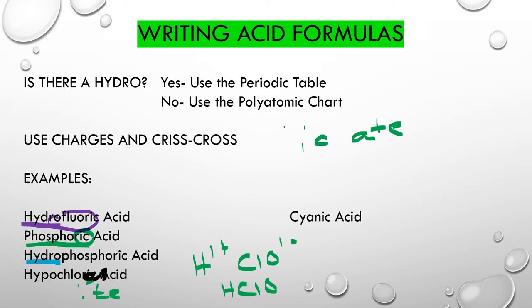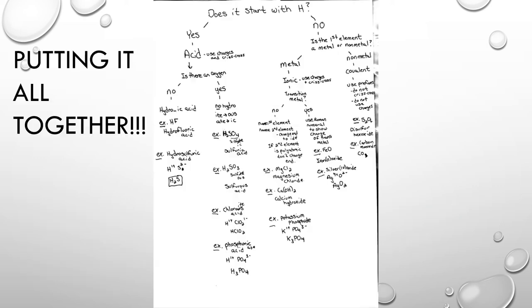Last one: cyanic acid. This is a little irregular because it comes from cyanide. Cyanide isn't an element on the periodic table, so we have to look at our polyatomic ion chart. We always start with H plus. Cyanide is CN with a one minus charge. So it's going to be HCN. That's how we write our acid formulas.